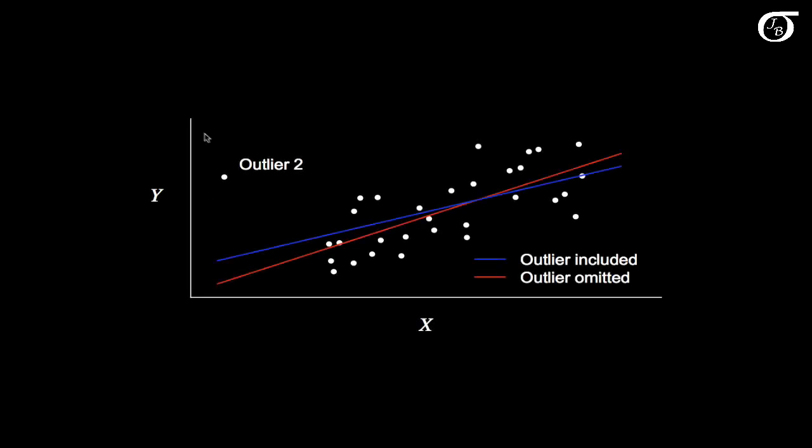Contrast that with this example where we have this outlier. And this outlier would have approximately the same residual value as that previous outlier, except this outlier changes the line a lot more. This blue line is with that point included, and this red line is when that point is tossed out. So this data point is much more influential. It's changed the line a lot more.